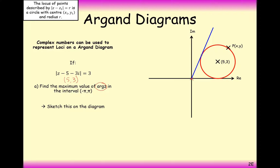We're looking for the argument of this complex number here on the diagram, so we want to find theta. What we can use here is some basic circle theorems, trigonometry (sine, cosine, tan), and coordinate geometry to help us work out the angle. It's basically a coordinate geometry question. The way we're going to do this is split up the problem into finding this angle inside here, and we can double it to get the total argument. We know the distance along the side is 5 and 3 going up.